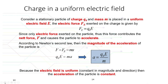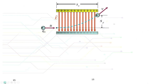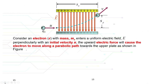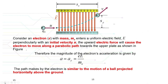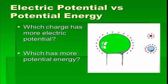Imagine an electron with mass m entering a uniform electric field E perpendicular to its initial velocity u. The upward electric force causes the electron to move along a parabolic path towards the upper plate, as shown in the figure. This is why the path of the electron is similar to the motion of a ball projected horizontally above the ground. I hope students can relate this concept as preparation for the next topics. Thank you for watching.